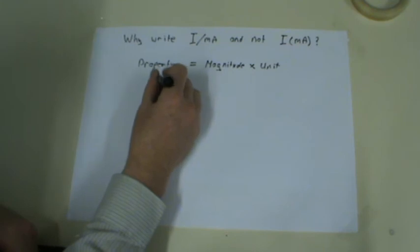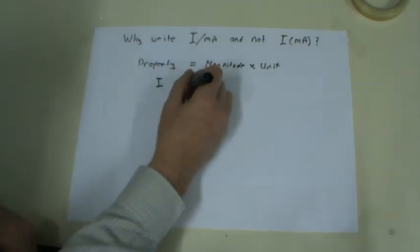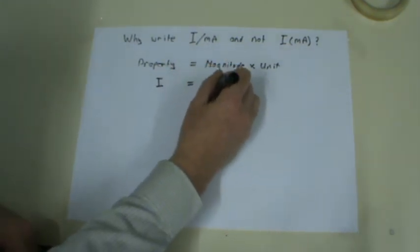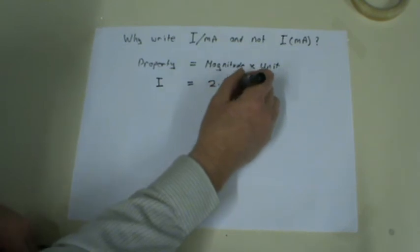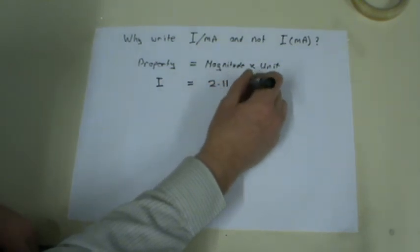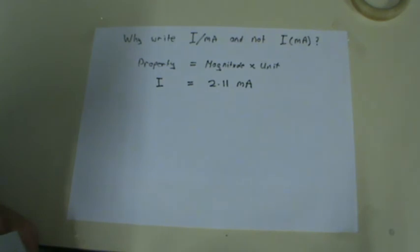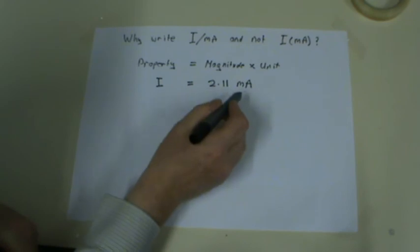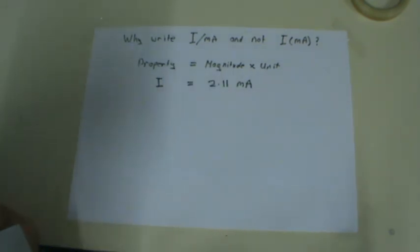So, for example, we could say the current that we're recording is 2.11 milliamps. And that's correct. But when we want to record a lot of data in a table, we don't want to constantly be writing milliamps after every magnitude.